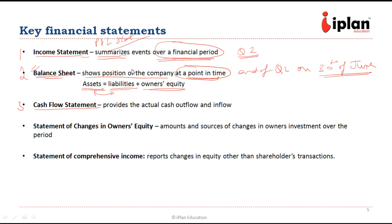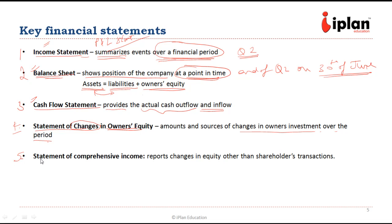Since we follow accrual-based accounting, the income statement may not represent actual cash flows. So we have a separate cash flow statement, which provides the actual cash outflows and inflows — basically, from where the company is getting cash and where the company is deploying it. Another important financial statement is the statement of changes in owners' equity, which reports any change in owners' equity and investment over a period. The fifth important financial statement is the statement of comprehensive income, which reports whether there is a change in equity.